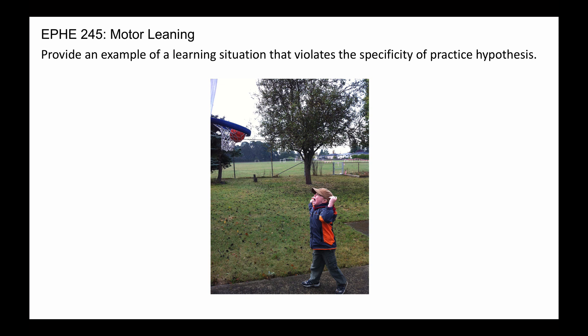Now what's the transfer condition? If the transfer condition is no vision, you would expect the visual group to suffer in terms of performance, and you would expect the no vision group to be fine because that's how they practiced. The reverse would be true if you transferred to a vision condition — you would predict that the vision group would be fine because they practiced with vision, but the no vision group would suffer because they were used to practicing without vision.